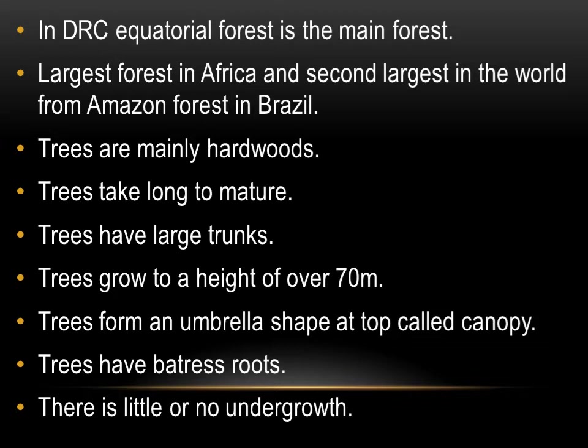Trees grow to a height of over 70 meters — they can even reach 120 meters, so they are very tall. Trees form an umbrella shape at the top called a canopy, where the branches are intertwined together. Trees also have buttress roots. Since these trees have very shallow roots — because of enough water, the roots do not go very deep — the trees develop roots on the stems and branches that go to the ground to provide support.